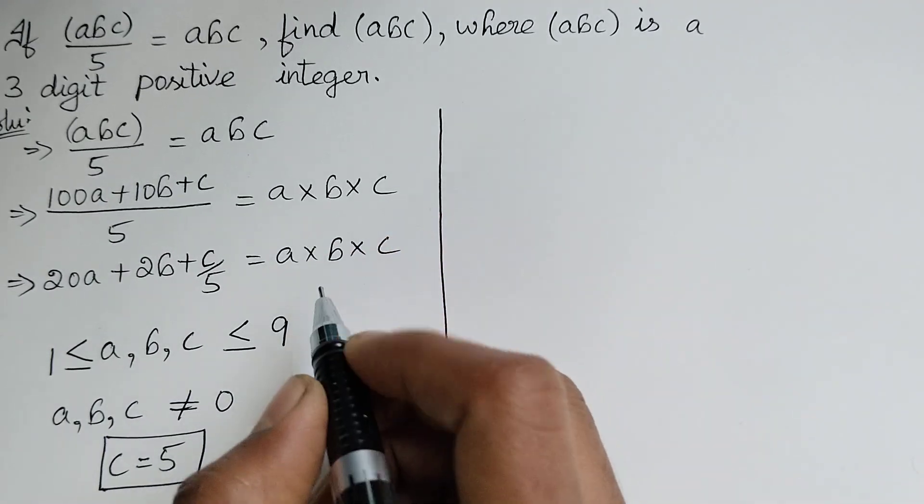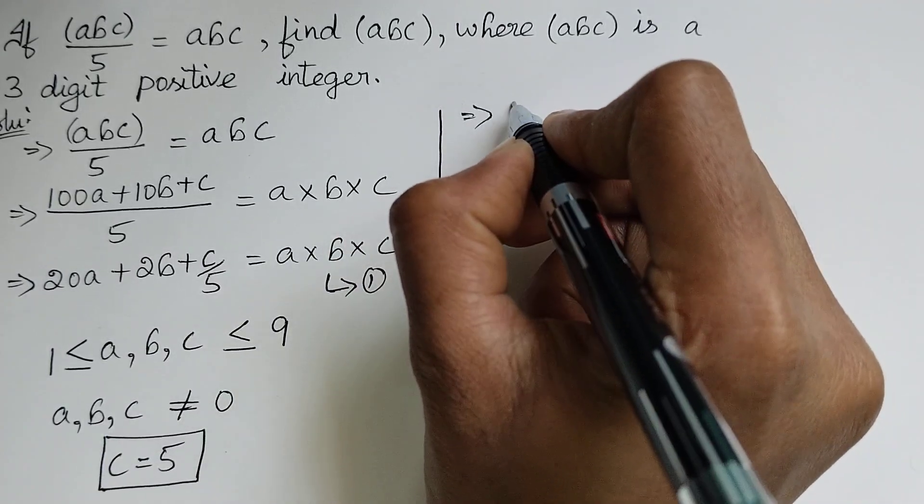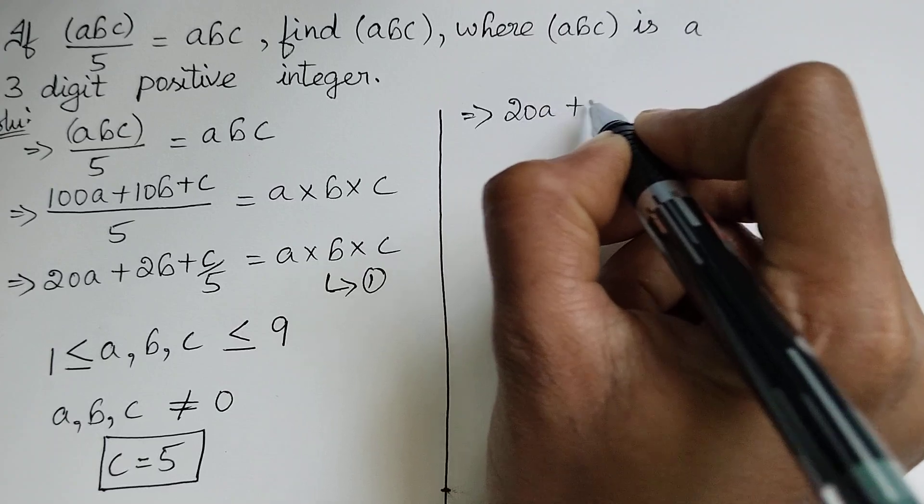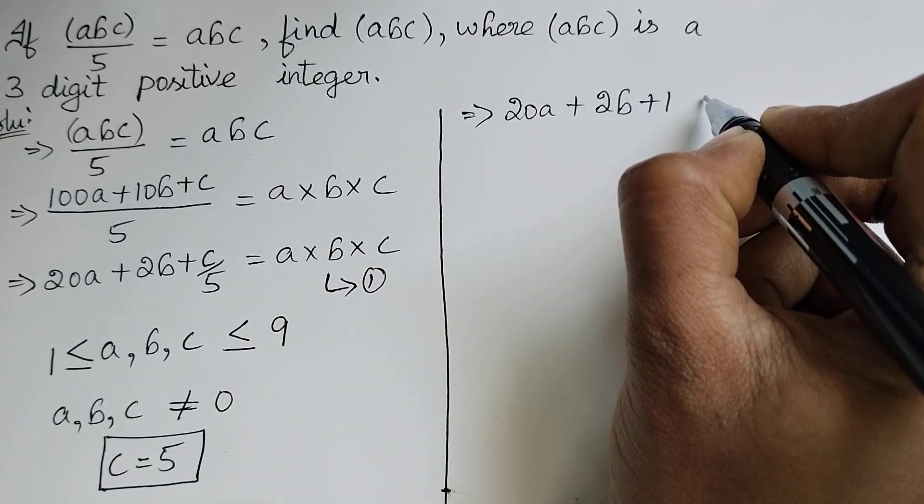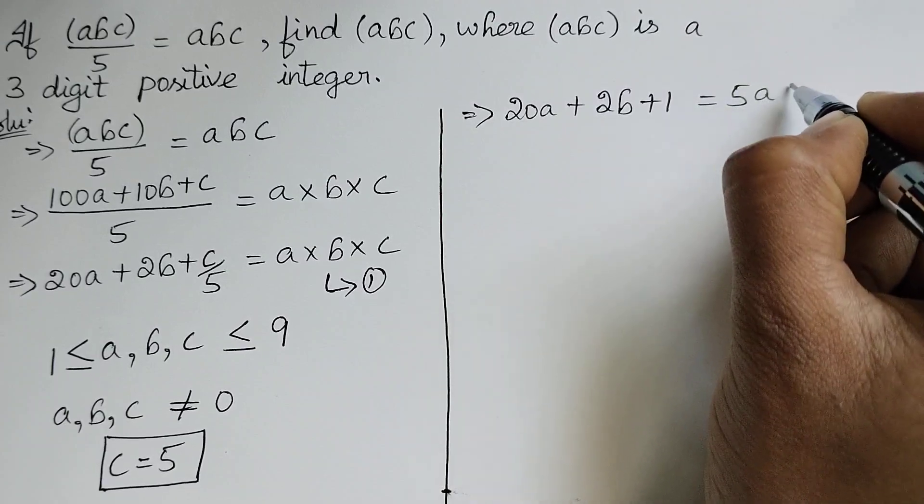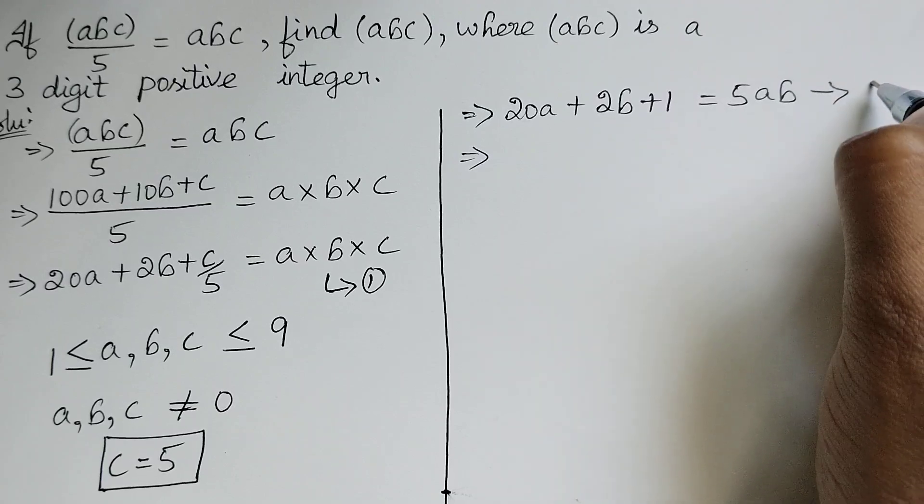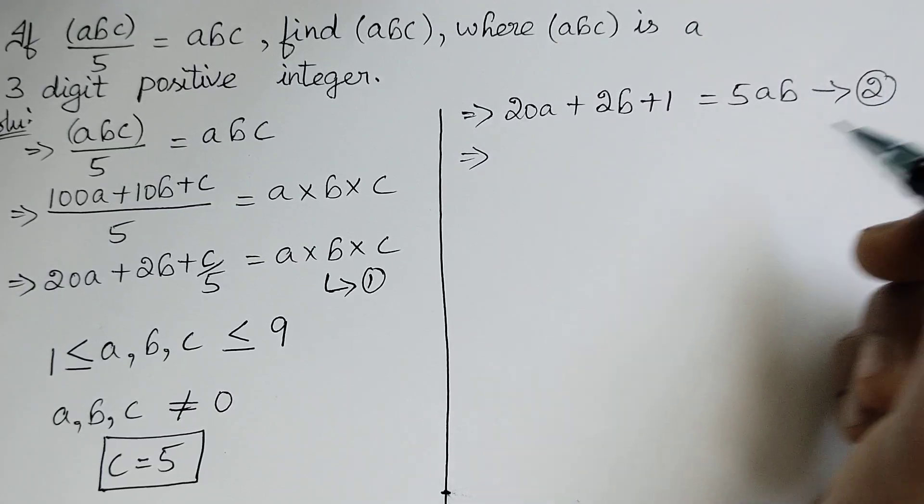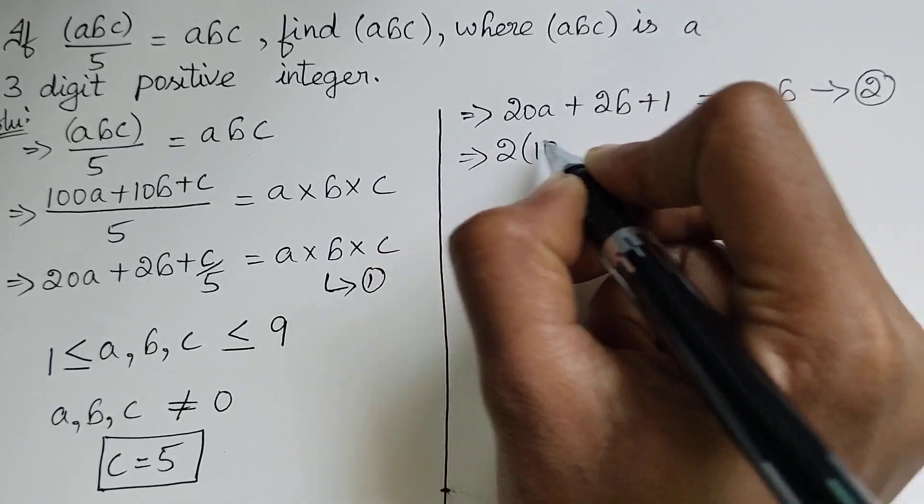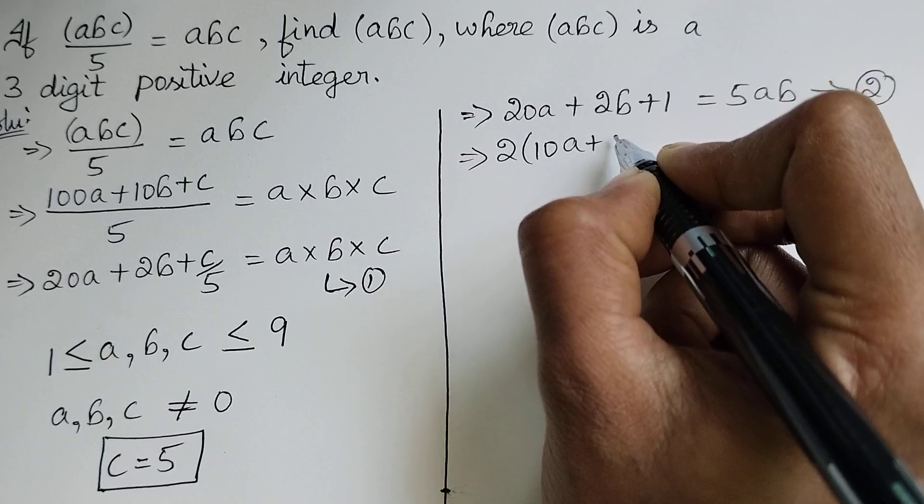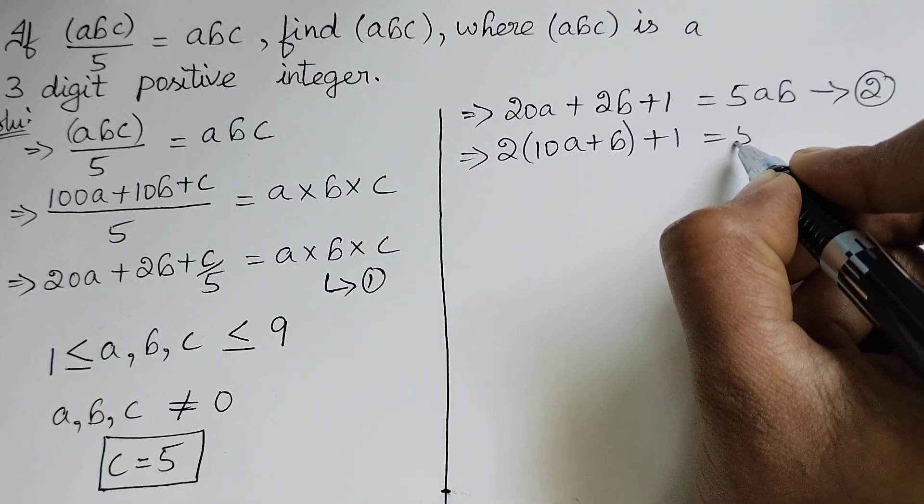Substituting this in equation number 1 we get 20a + 2b + 1 = 5ab. Let us take this as equation number 2. Now taking 2 as a common we get 2(10a + b) + 1 = 5ab.